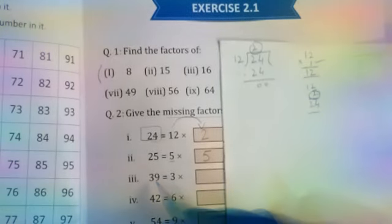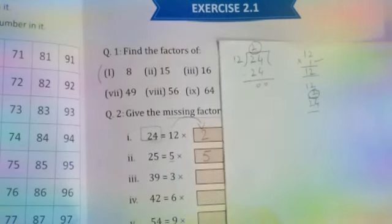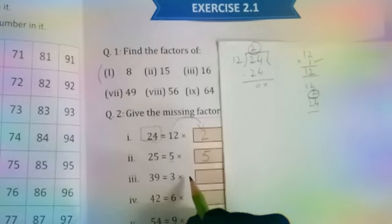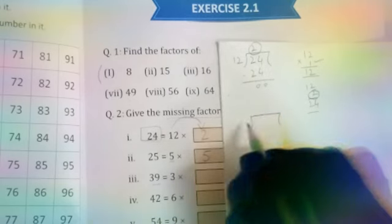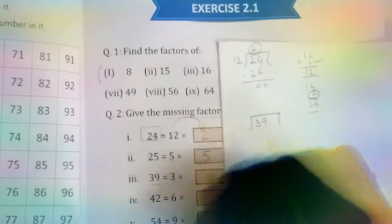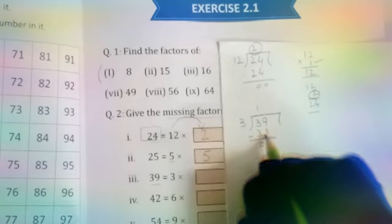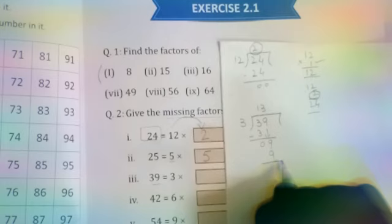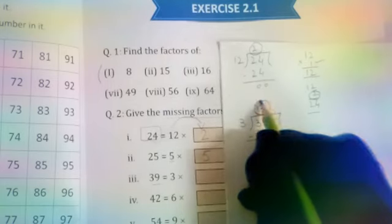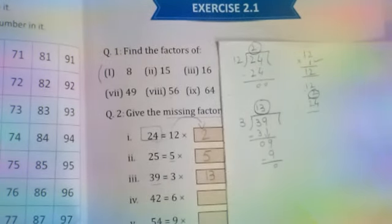Next we have 39. 3 multiplied by what gives 39? We know the 3 table, but not this far, because you've learned 3 tens are 30. For 39 we have a problem. So we use the same method again. We take 39 as dividend and divide by 3. 3, 1's are 3. Minus gives 0. Write 9. 3 times what? 3's are 9. The answer is 0, so our quotient is 13. So the answer here is 13, meaning 3, 13's are 39.